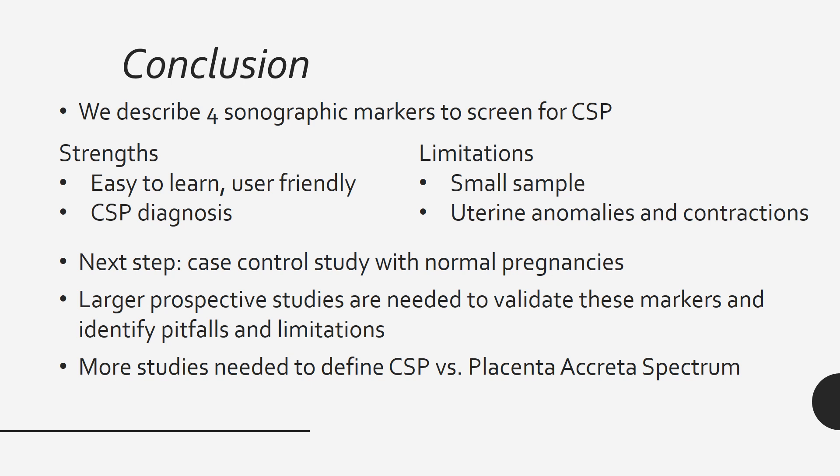We acknowledge a small sample size, as CSP is still a relatively rare diagnosis — a limitation for any single institution study. We also recognize potential pitfalls that may obscure these markers, such as uterine anomalies or persistent uterine contractions. For example, a bicornuate uterus can falsely make a pregnancy appear like a CSP if the fundus of the empty horn and the gestational sac in the other horn are imaged in the same frame. Our next step is a case control study to test these markers on normal controls, followed by a larger prospective study to validate them.